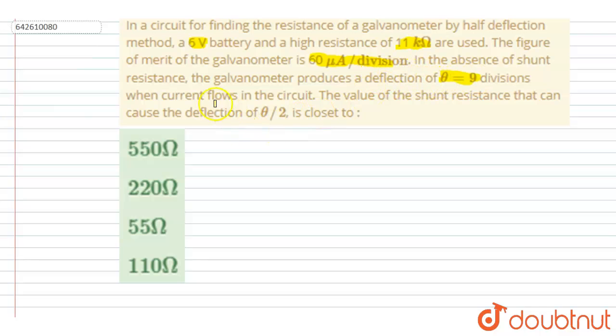Close to 9 divisions when current flows in the circuit. The value of shunt resistance that can cause theta by 2 is close to... So here, the number of divisions given is 9, and the per division current is 60 micro ampere, so I will write the total current as...